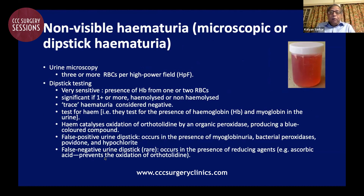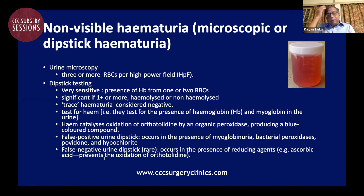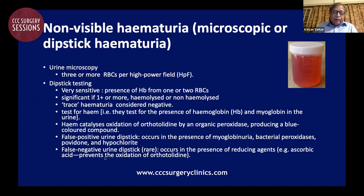Non-visible hematuria — that is, microscopic or dipstick hematuria — is classically defined in Campbell's standard textbook of urology as three or more RBCs per high power field. Other guidelines of urological societies mention up to five or even ten RBCs per high power field as being normal. I will go into a little theoretical discussion at this stage because these are concepts which should be clear in our minds, as a simple question on hematuria can turn in an entirely different direction in the course of an exam.